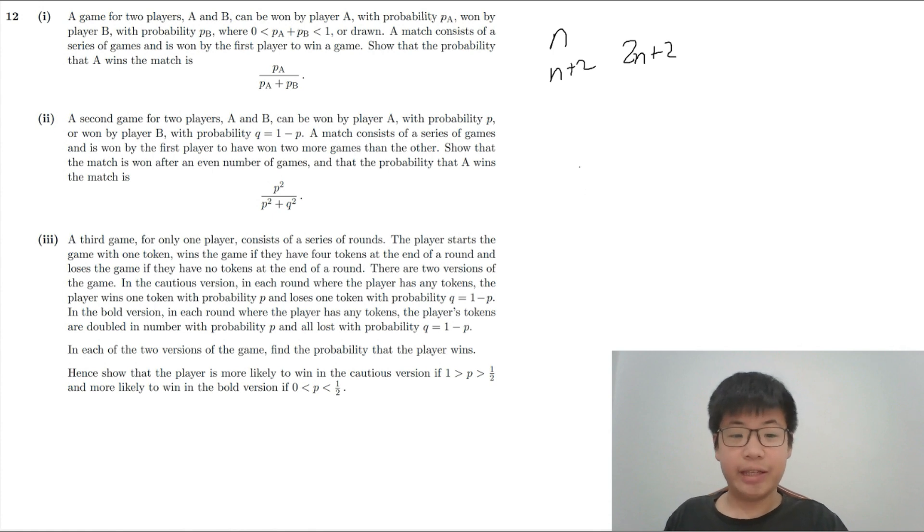And now the probability that A wins the match, the difference between the number of games won is initially 0 and it either increases or decreases by 1 after each game. So the game is equivalent to that in part 1 actually with PA equals to P squared and PB equals to Q squared. Why? It's because there is no draw option here. So the probability that A wins the match is P squared over P squared plus Q squared.